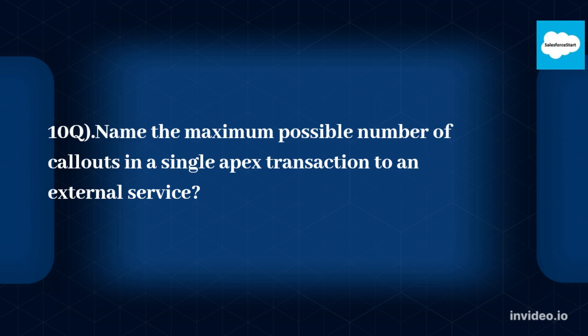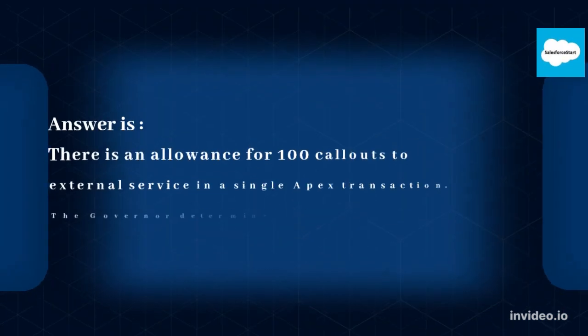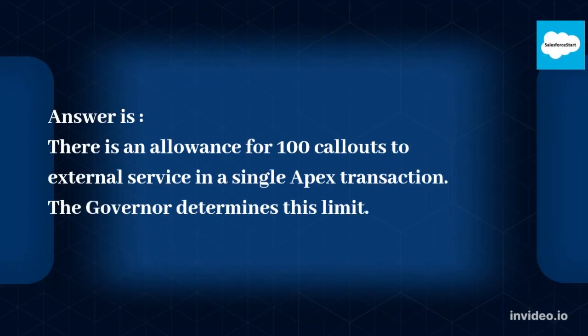Q10: Name the maximum possible number of callouts in a single APEX transaction to an external service. There is an allowance for 100 callouts to an external service in a single APEX transaction. The Governor limits determine this limit.